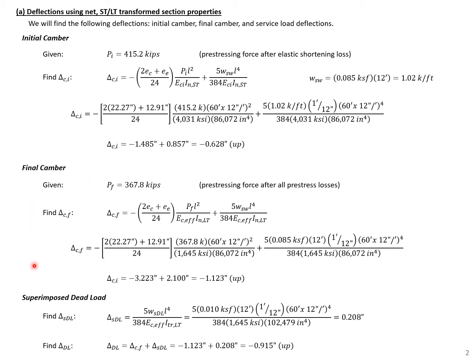Next, we can find our final camber, which includes all time effects. Here we need the pre-stressing force after all pre-stressing losses, and we use our long-term net section properties and the effective modulus of elasticity, E_c,eff, which takes into account creep. We remember that our short-term net is about equal to our long-term net, which is about equal to our gross moment of inertia — so the same moment of inertia applies, but the modulus decreases. Plugging in all values, we get a final camber of 1.123 inches upward.